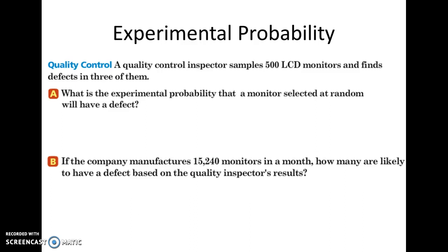Here are some examples. A quality control inspector samples 500 LCD monitors and finds defects in three of them. What is the experimental probability that a monitor selected at random will have a defect? If you look back to that ratio, the total amount in the event, so there are 500 TVs or monitors, how many will be defective? They told us that three of them will be defective. If you convert that into a decimal, you're going to get 0.006. Convert that into a percent, and it's 0.6%. So it's very few LCD monitors will be defective.